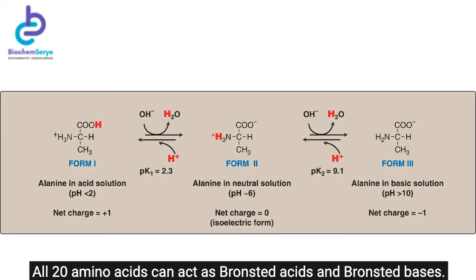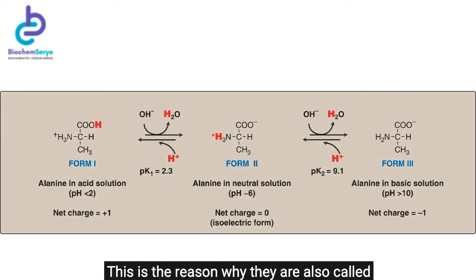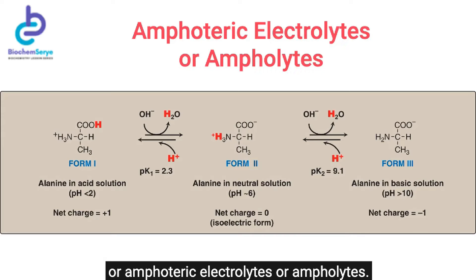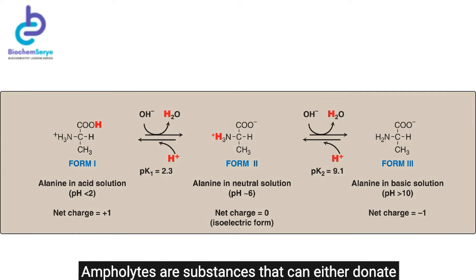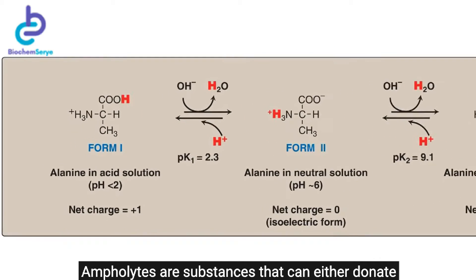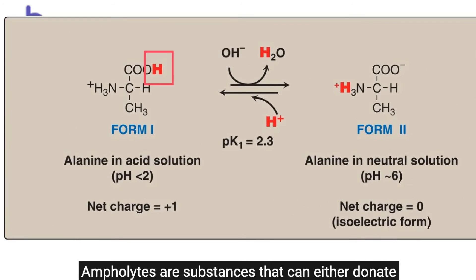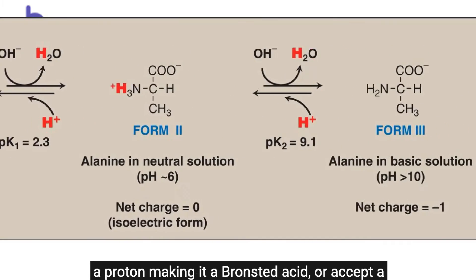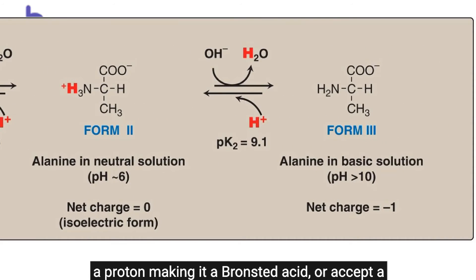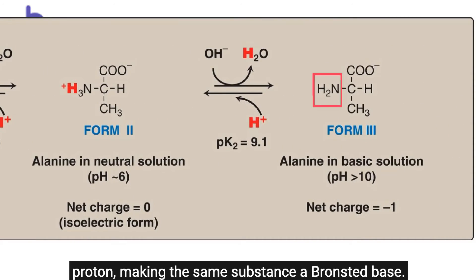All 20 amino acids can act as Bronsted acids and Bronsted bases. This is the reason why they are also called amphoteric electrolytes or ampholytes. Ampholytes are substances that can either donate a proton, making it a Bronsted acid, or accept a proton, making the same substance a Bronsted base.